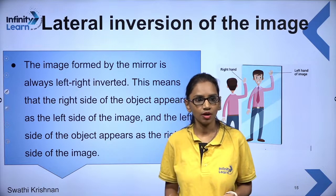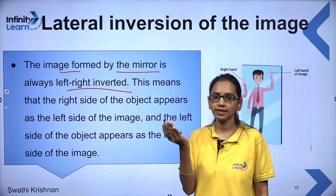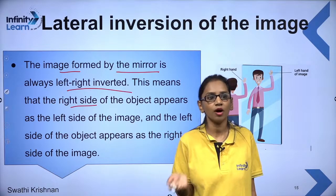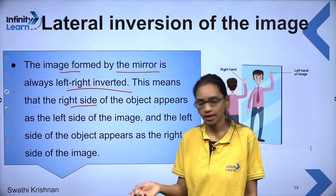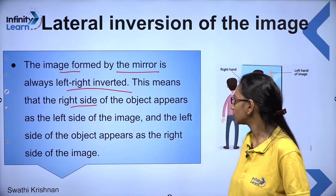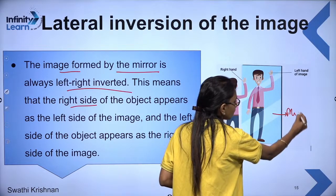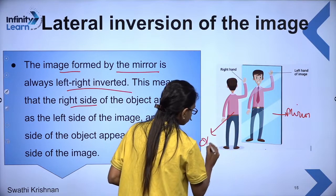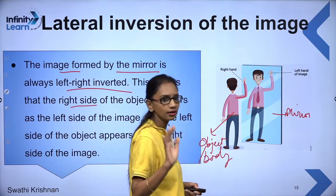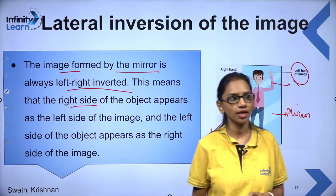Lateral inversion means the image formed by the mirror is always left-right inverted. The right side of the object appears as the left side of the image, and the left side appears as the right side. For example, if the man in the image raises his right hand, you can see the left hand of the image raised — that is what we call lateral inversion.